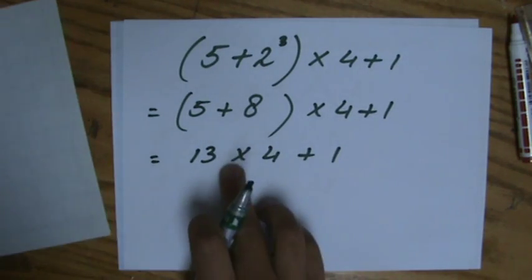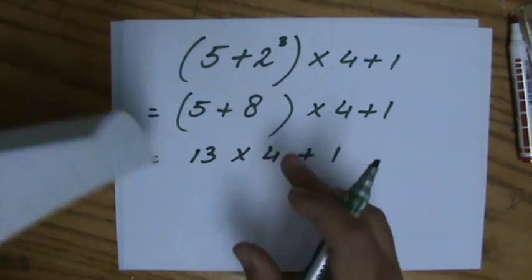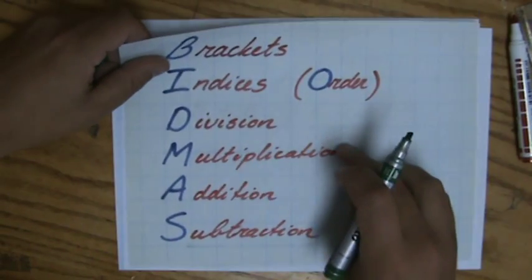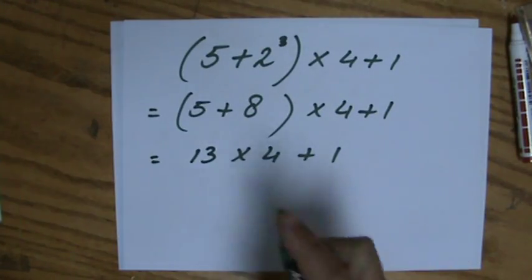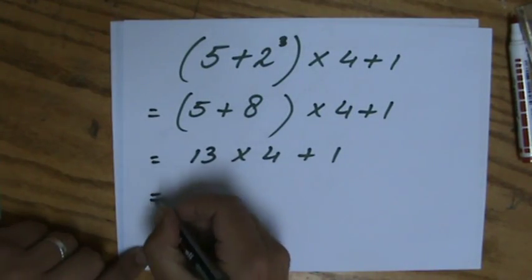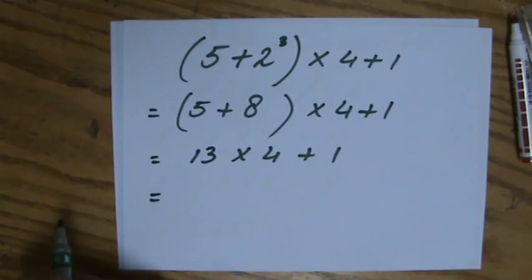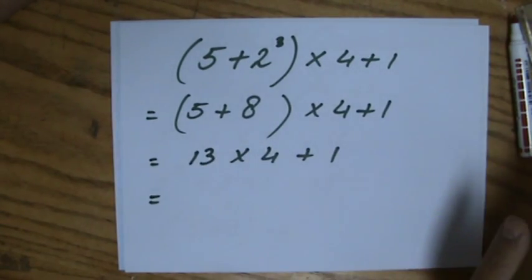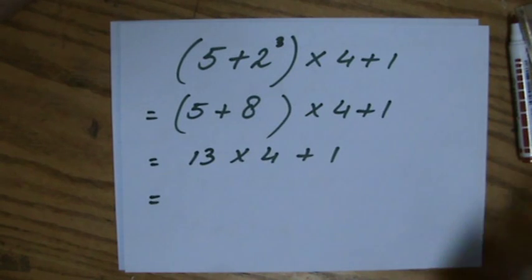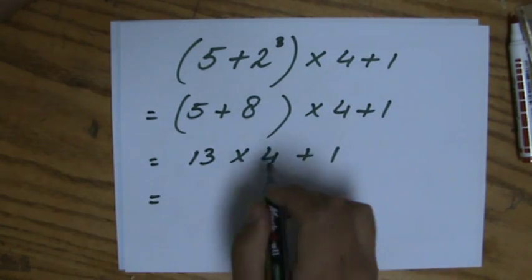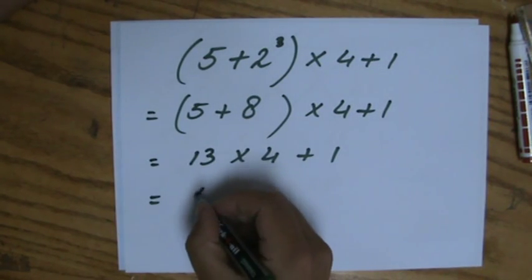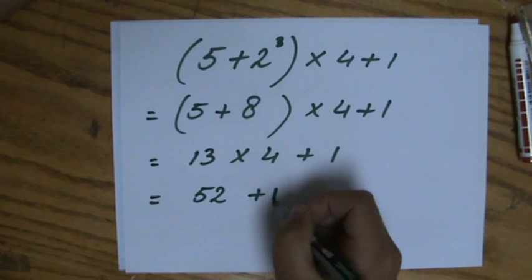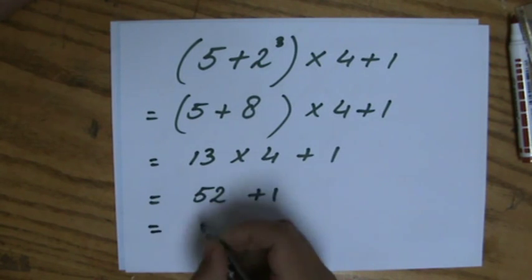What do I do then — multiplication or addition? Multiplication is above addition in BIDMAS, so I multiply first. 4 times 13 is 52, plus 1. So the final answer is 53.